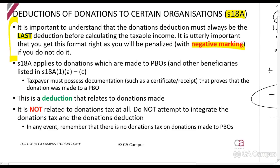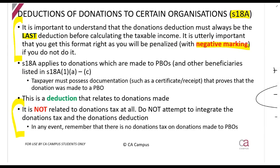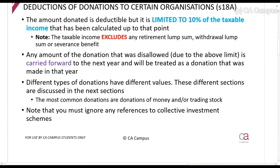If you make a donation to a public benefit organization, you must always get proof — they must give you a certificate or receipt, some sort of documentation. Please note this has nothing to do with donations tax at all. Don't include donations tax — that's also negative marking. Donations tax is a completely separate tax. Also remember: if you make a donation to a public benefit organization, there's no donations tax on that either.